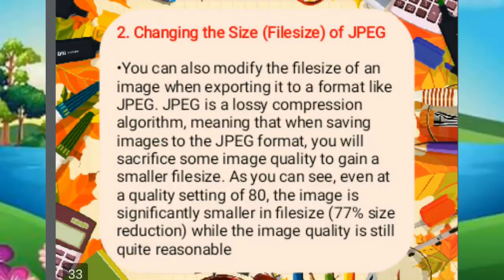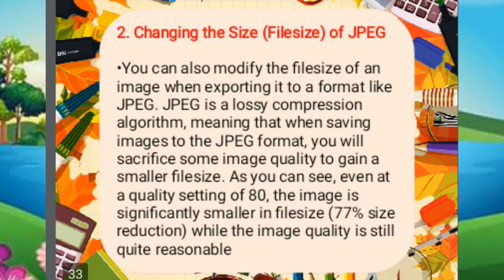Number two main point in using GIMP is changing the file size of a JPEG. You can modify the file size of the image when exporting it to a format like JPEG. JPEG uses a lossy compression algorithm, meaning that when saving images to the JPEG format, you will sacrifice some image quality to gain a smaller file size. Even at a quality setting of 80, the image is significantly smaller in file size — a 77% size reduction — while the image quality is still quite reasonable.